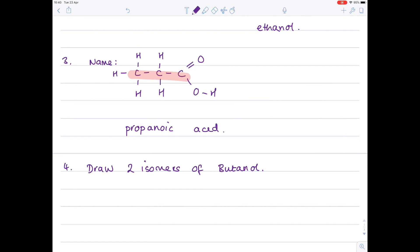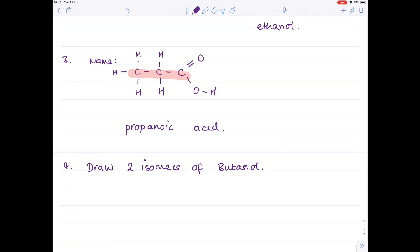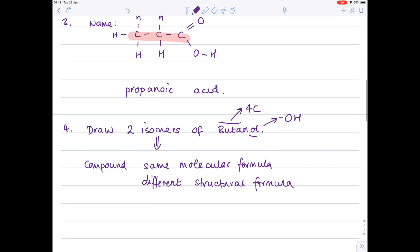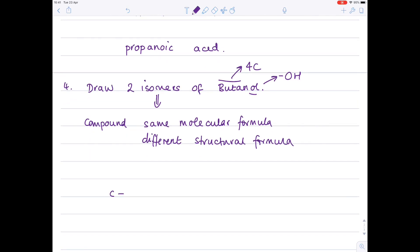Question 4, we're being asked to draw two isomers of butanol. Lots of information here. This requires quite an in depth chemistry knowledge. An isomer first of all is a compound with the same molecular formula but different structural formula. Next up butanol. Because it's butanol it means it contains four carbons. Because it's got ol on the end it's an alcohol so it has an OH functional group. So let's try and formulate our isomers now.